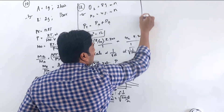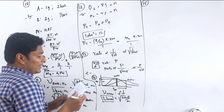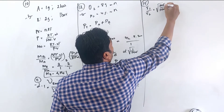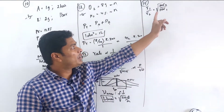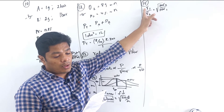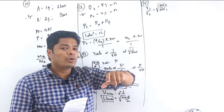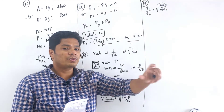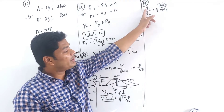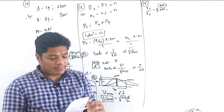Question 15: 4 grams of oxygen diffused through a narrow hole. How much hydrogen would diffuse under identical conditions? Using Graham's law with rates as moles/time. Convert 4 grams O2 to moles (4/32 = 0.125 mol), calculate the mole ratio using √(M_O2/M_H2) = √(32/2) = 4, then convert hydrogen moles to grams. Option B.